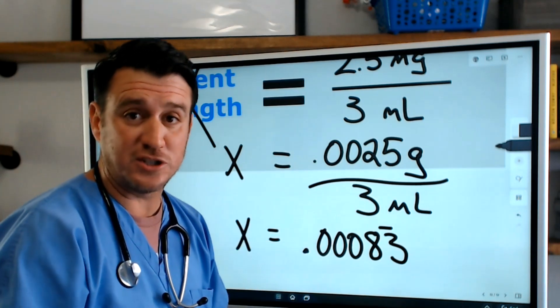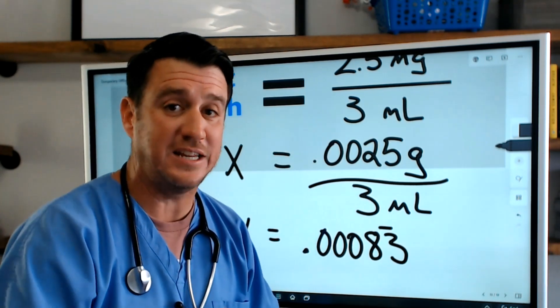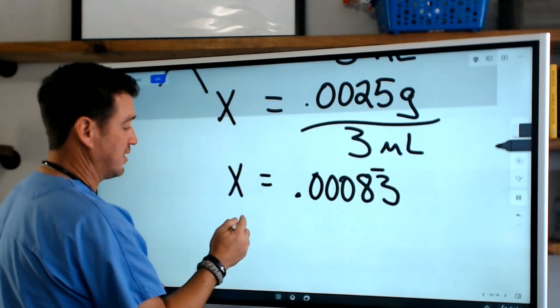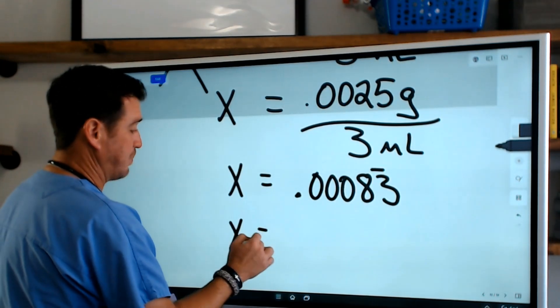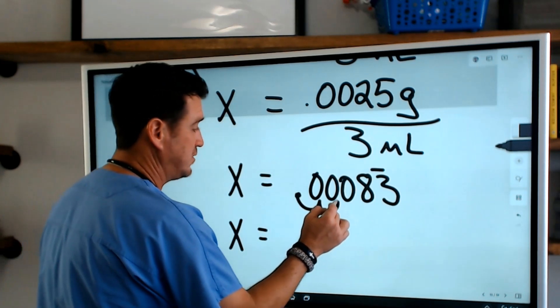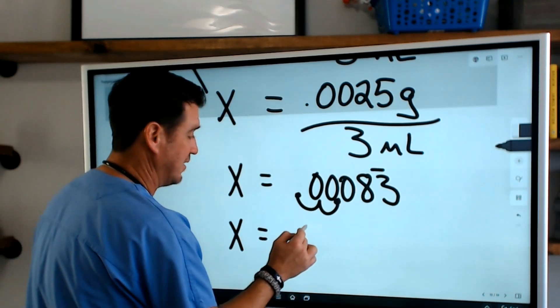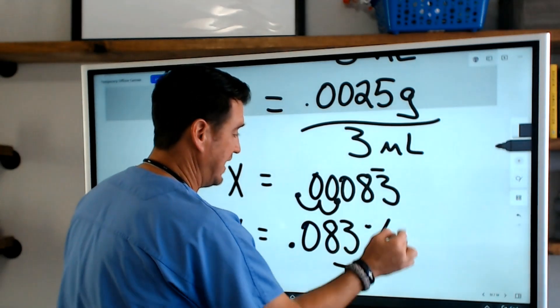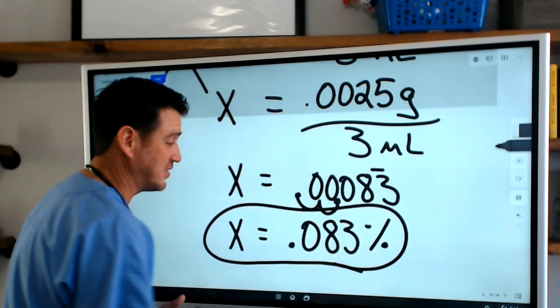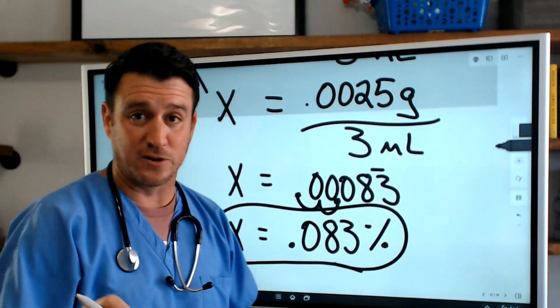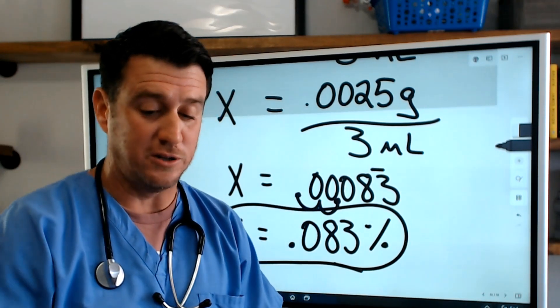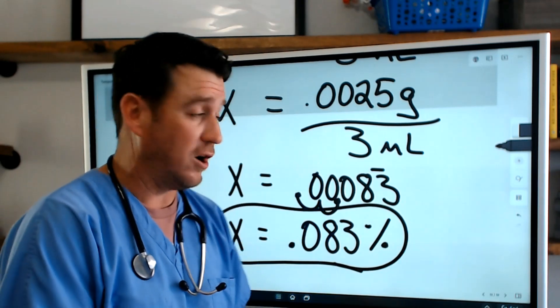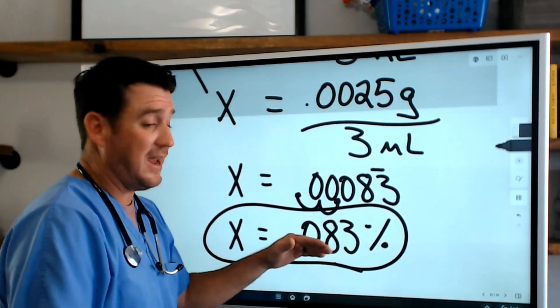Now that's your percent strength, but it's not in a percentage yet because it's still in decimal form. To turn this into a percentage, we just have to move the decimal two spots. So the answer is 0.083 percent. When you deliver 2.5 milligrams in a three milliliter solution, you are administering a percent strength of albuterol of 0.083 percent.